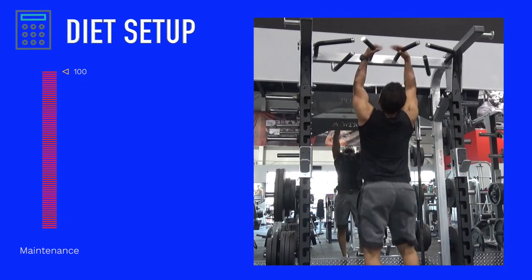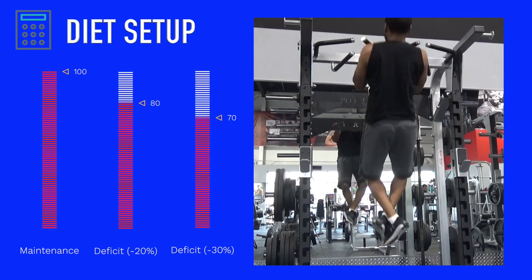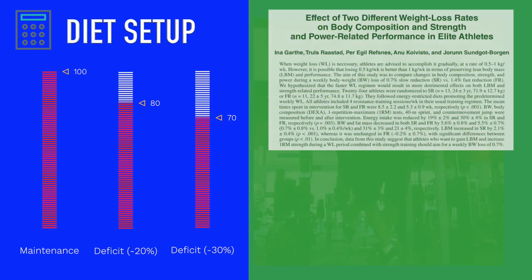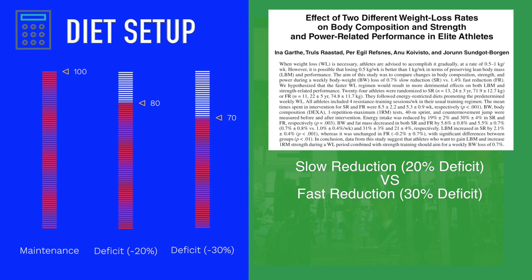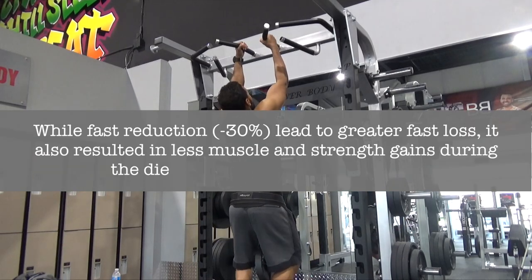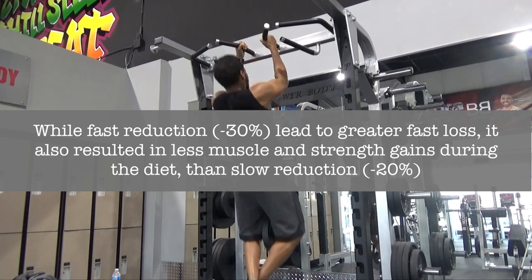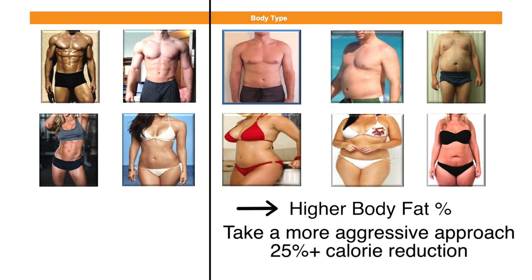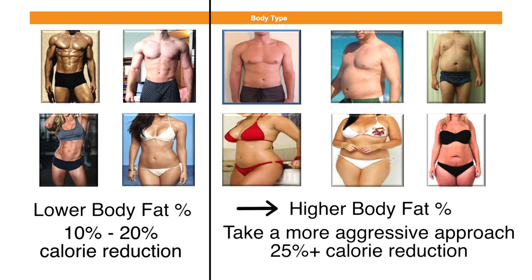Once we've established a dieter's maintenance calories, we need to reduce that number to establish a deficit. A study on elite athletes compared a 20% to a 30% calorie deficit to see the effects on body composition and performance. While a 30% deficit led to greater fat loss, it also resulted in less muscle and strength gains compared to the 20% deficit. A general recommendation for those with a higher percentage of body fat is to take a more aggressive approach — 25% and above. For athletes and those with a lower body fat percentage, a more moderate approach of 10 to 20% can help preserve muscle and performance.